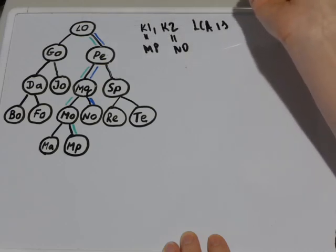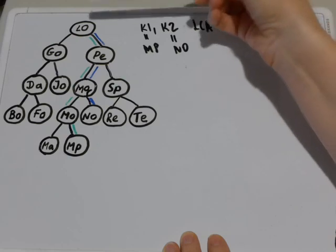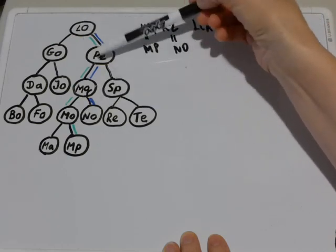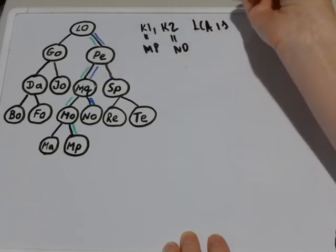Common ancestors of these two nodes are those ancestors that are common to both of these nodes. LO, PE and MQ are common ancestors.